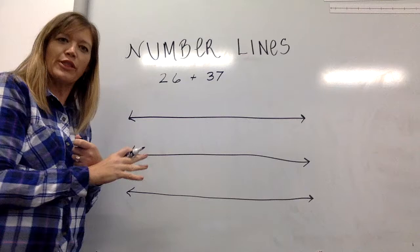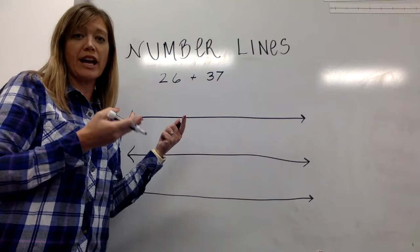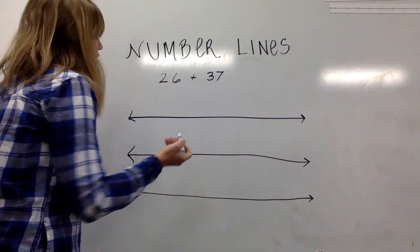On an open number line our students have come to understand that with our lines pointing in both directions we know it carries on from before where we start at and after. So we can create our own type of number line to represent this.